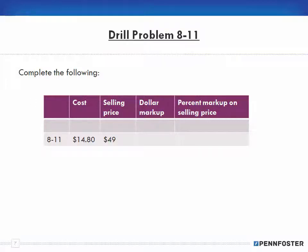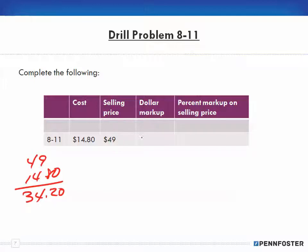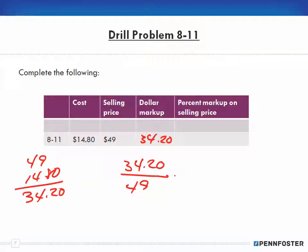Problem 8-11 is similar to 8-7. The dollar markup is simply the difference: $49.00 minus $14.80 equals $34.20. We're looking for the percent markup on the selling price, so we divide $34.20 by $49.00, which gives us 69.8 percent.